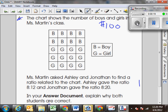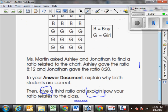In your answer document, explain why both students are correct. Then give a third ratio and explain how your ratio relates to the class.